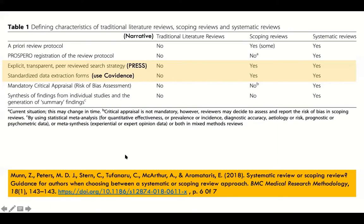This is my favorite table from Munn et al. — on page six out of seven. It gives a very nice summary of features that those starting on knowledge synthesis products are often worried about, such as an a priori review protocol and other features, and then the differences between the three main types of reviews.